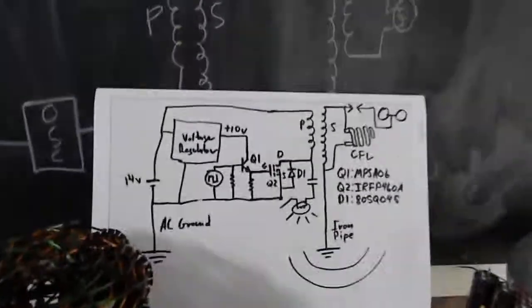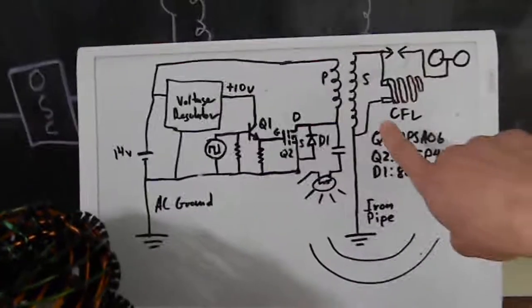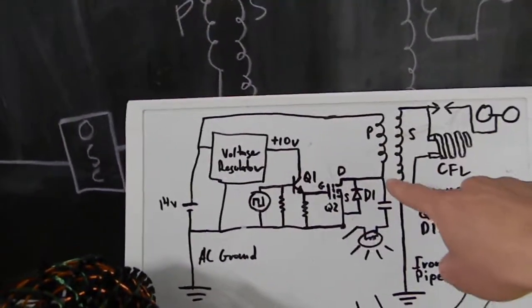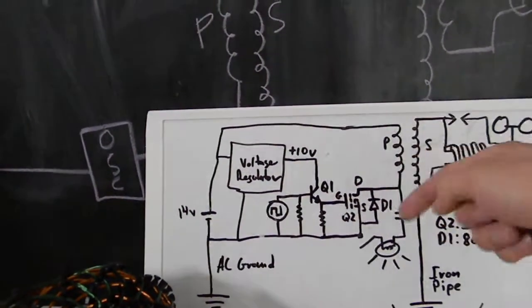So essentially we have some type of energy that's being reflected back from the spark back into the circuit. We can see that it's about 400 microseconds, so we can see that on the primary.